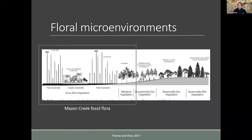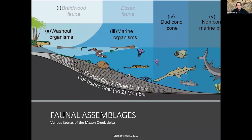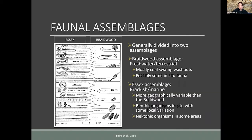The Maison Creek shows very minimal input from the seasonally dry or seasonally wet vegetation of more distal upland areas. The fauna is actually more complicated than the flora because it covers more local environments, and many things were more likely living in place rather than being transported. It was very early on recognized that there are two main faunal assemblages: the Essex assemblage and the Braidwood assemblage. The Braidwood assemblage is the freshwater and terrestrial fauna and flora, while the Essex assemblage is more brackish or marine.